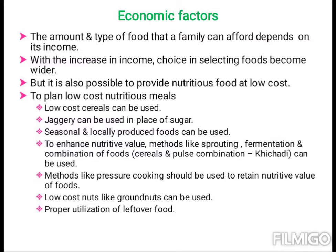The first factor is economic factors. The amount and type of food that a family can afford depends on its income. With the increase in income, choice in selecting foods becomes wider, but it is also possible to provide nutritious food at a low cost. To plan low-cost nutritious meals, low-cost cereals can be used, jaggery can be used in place of sugar, and seasonal and locally produced foods can be used to avoid financial burden.